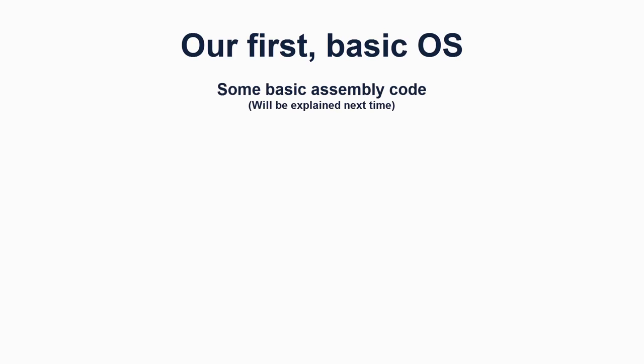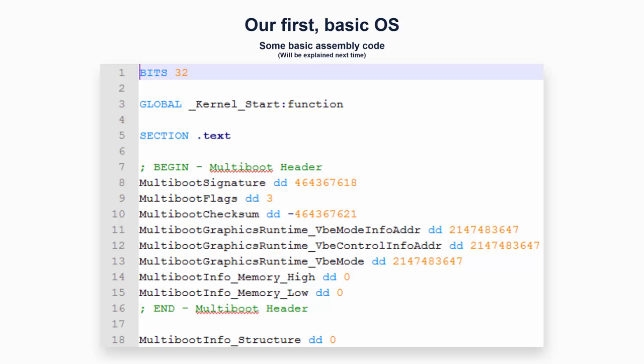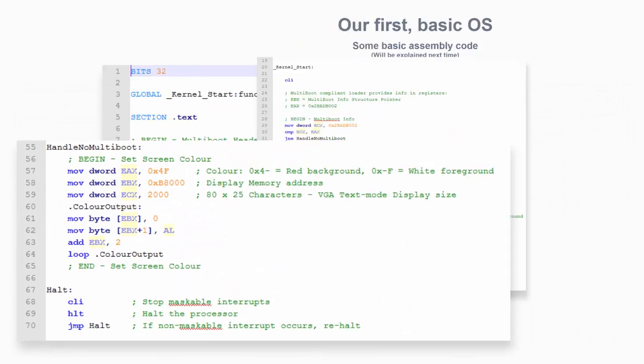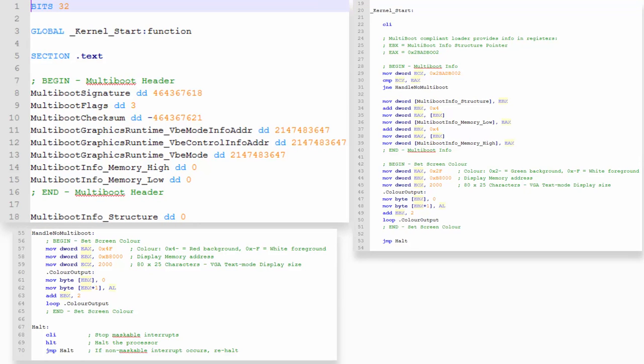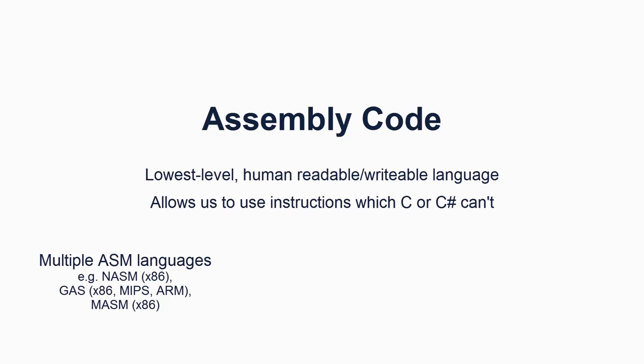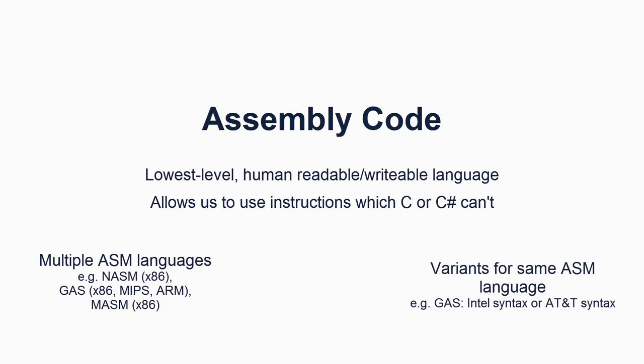For now, we just want some basic assembler code that will act as a stub for our operating system. We will look at assembly code in more detail in future and extend our operating system to actually display something. For now, use the assembly code shown — the link is in the description. Save this as kernel.asm. Assembly language is the lowest level human readable language that there is. There are more than one assembly languages, one for each different architecture. In these tutorials, we will be using the NASM variant of the x86 assembly language. Assembly code uses acronyms and minimal syntax to represent the machine code which a computer can understand, allowing us to write machine code in a human readable way.